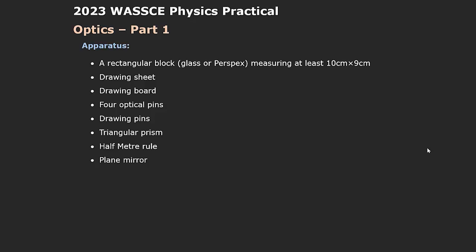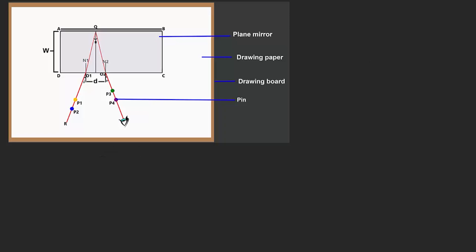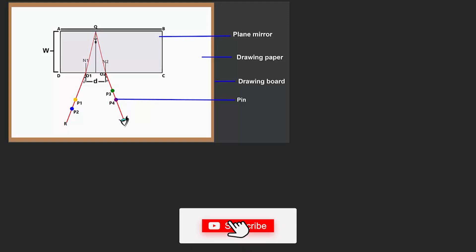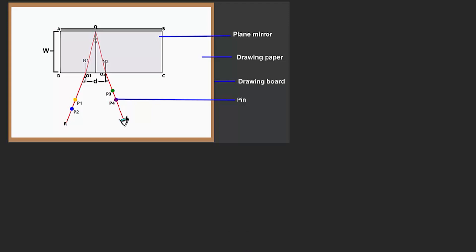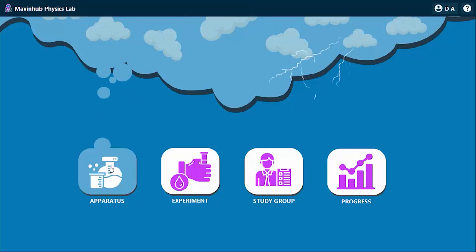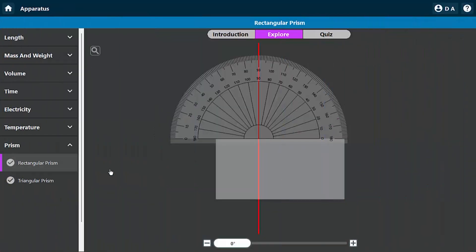Let's take a look at the first possible experiment. I'm going to use the Marvinal Physics Lab to give you an idea of how it looks. Let me show you how a rectangular block prism looks like and the way light passes through it.